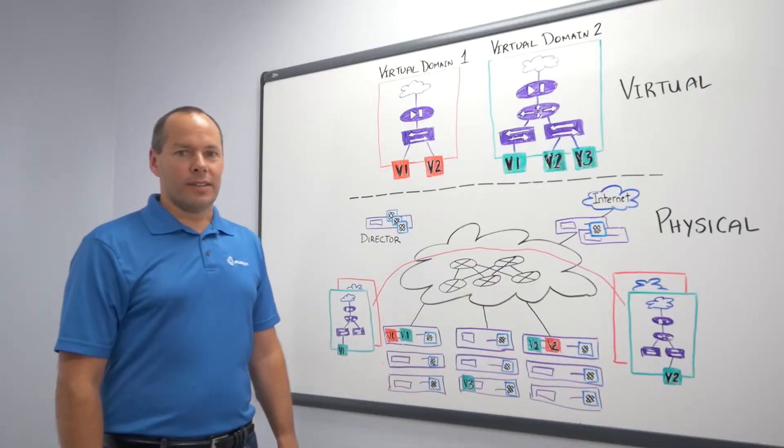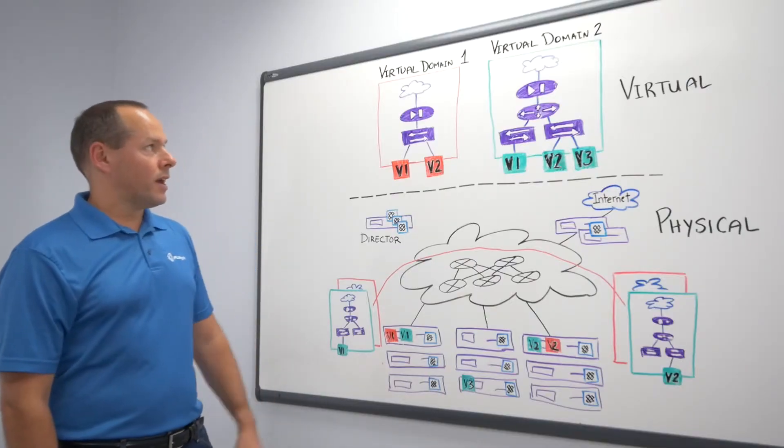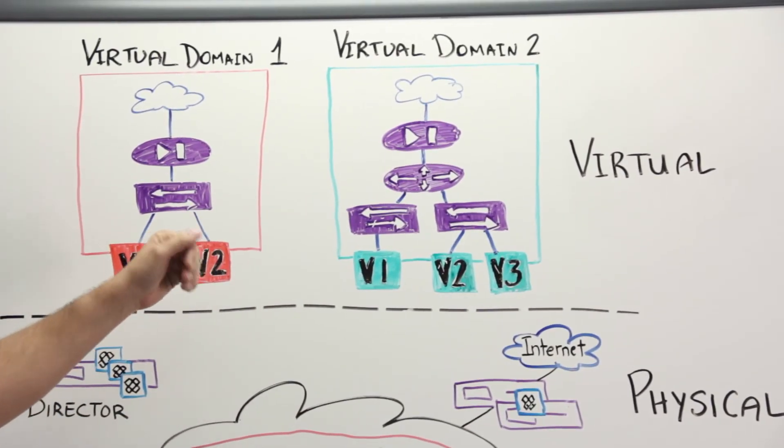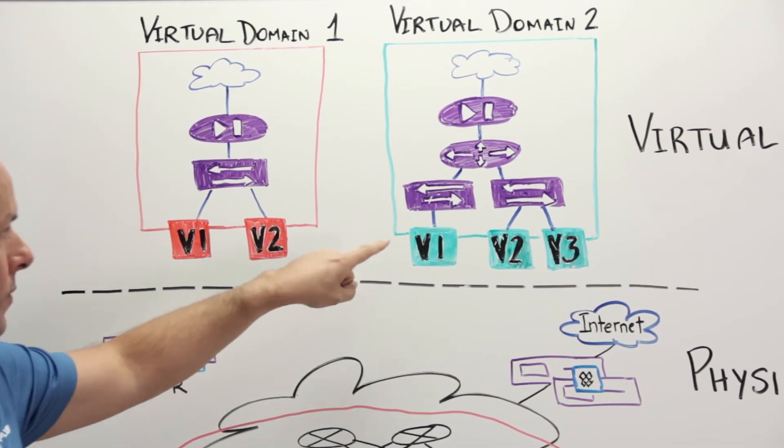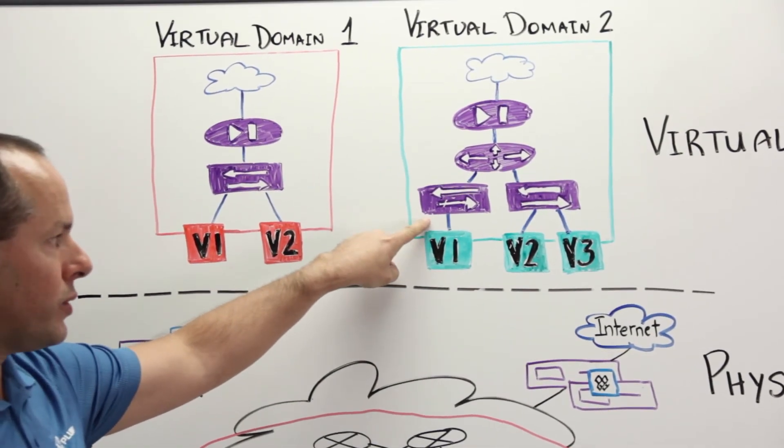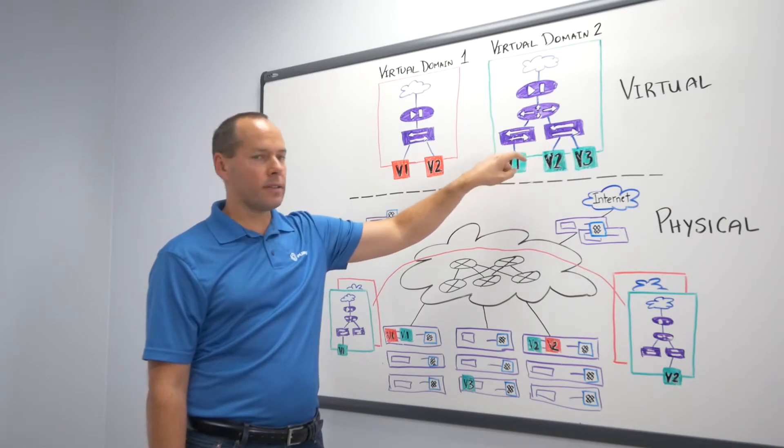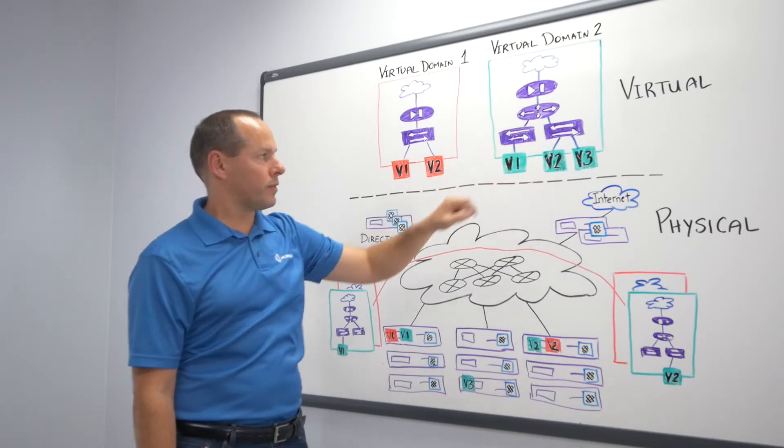So here in our second instance, we're going to take a look at the green virtual domain 2 over here. As you can notice that we have a more complex topology. We have virtual machine 1 on its bridge 1 and virtual machine 2 and 3 on bridge 2, connected via a router virtual network function.